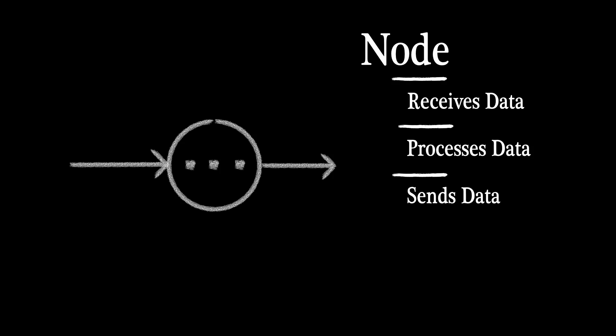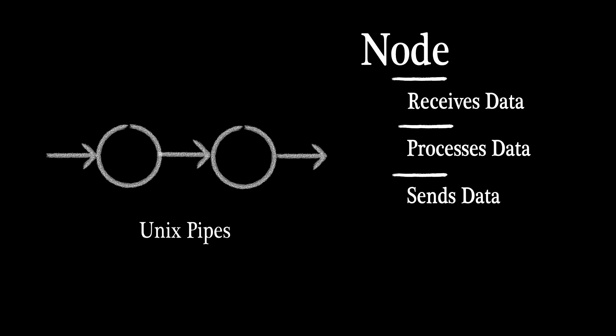Let's start with the definition of a node. It receives data, it processes it, and sends it on to the next node. String a few of these together and you get Unix pipes, filters, the pipeline architecture.